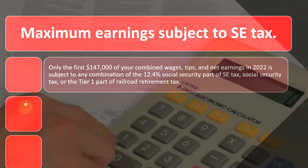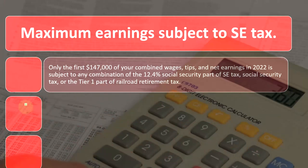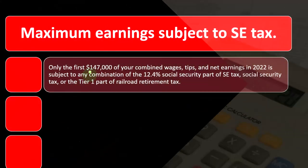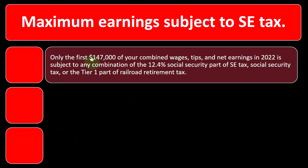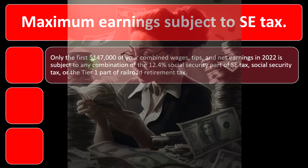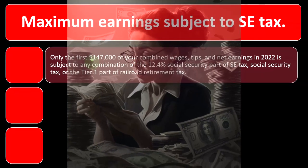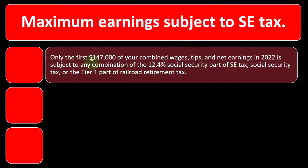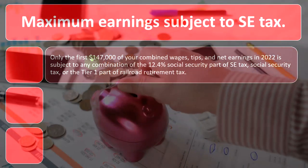Only the first $147,000 of combined wages, tips, and net earnings in 2022 is subject to the 12.4% Social Security part of the SE tax. So if your Schedule C net income were $200,000, you would only pay Social Security tax on $147,000, not the full $200,000. This cap exists because Social Security is treated more like a retirement program than a general tax — the more you pay in, the more benefit you should receive in return.